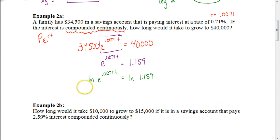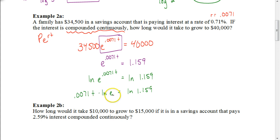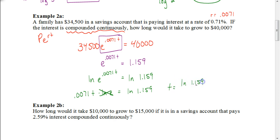Putting that exponent in front gives 0.0071 times T times the natural log of E equals the natural log of 1.159. The reason we took the natural log of both sides is because the natural log of E is 1 — natural log is a logarithm with base E, and when the base matches, the answer is always 1. So to solve for T, divide both sides by 0.0071. T equals the natural log of 1.159 divided by 0.0071, which gives a final answer of about 20.8. So it would take 20.8 years for $34,500 to grow to $40,000.